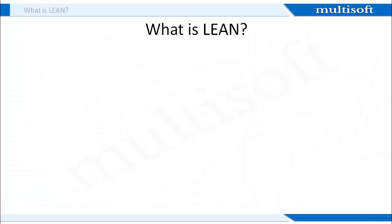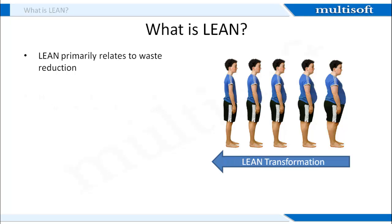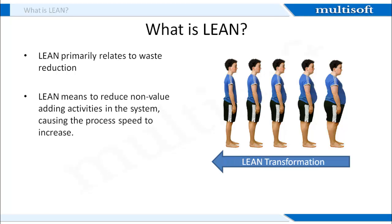Let's now understand what is LEAN. LEAN is a process improvement methodology that primarily focuses on waste reduction. The whole idea behind implementing LEAN practices is to reduce the non-value-added activities from the system so that the process speed can be increased. Waste could be of various types, such as overproduction, movement of products to different locations, underutilization of resources, etc. Such wastes need to be eliminated in order to improve the overall process functioning.